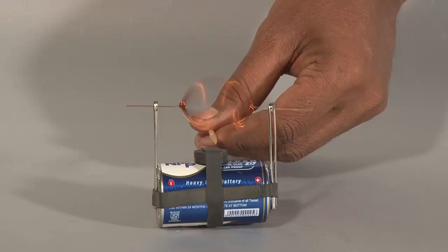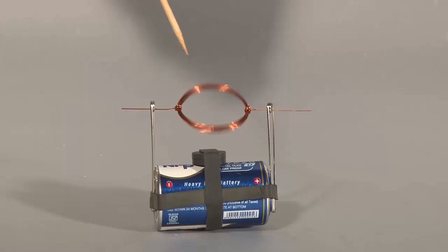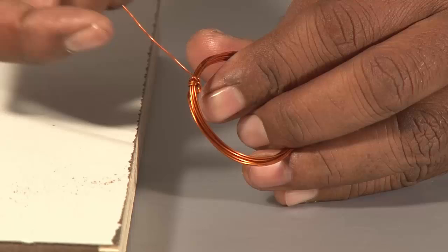The permanent magnet placed in the vicinity of the electromagnet gives it an attractive or repulsive kick depending on the polarity of both the magnets. And the coil rotates.